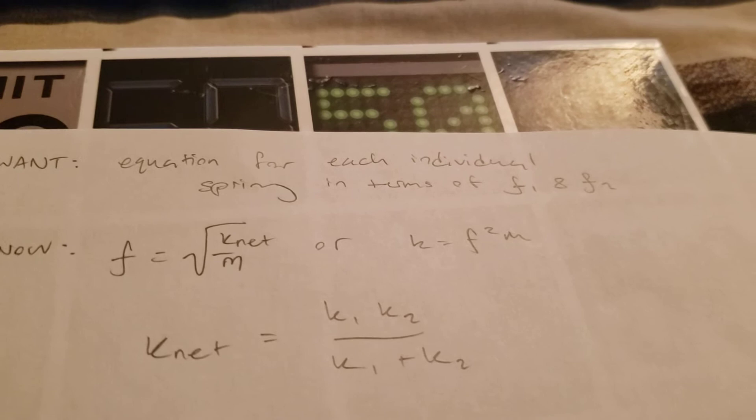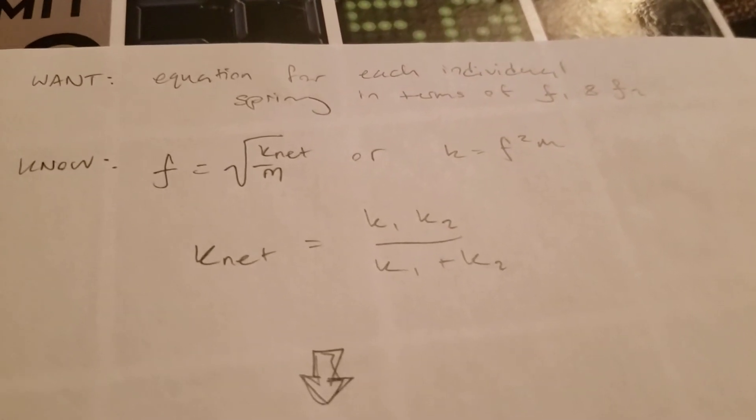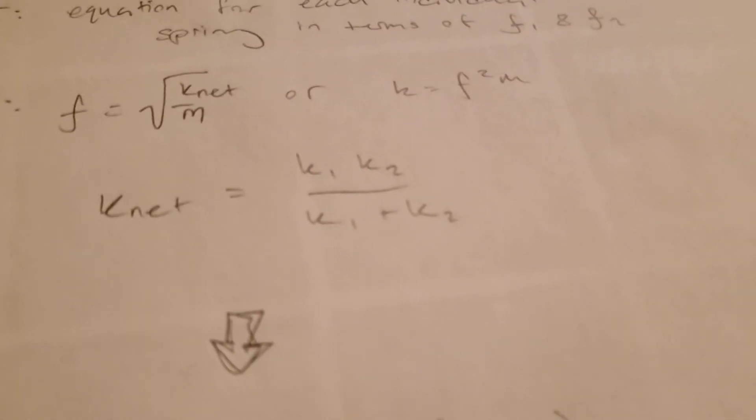So to start, what we want is an equation for each individual spring in terms of f1 and f2. So to do that, we have to break the spring down into both of its individual components from the total spring constant, as you see here.